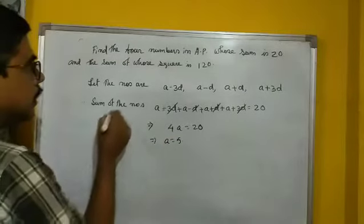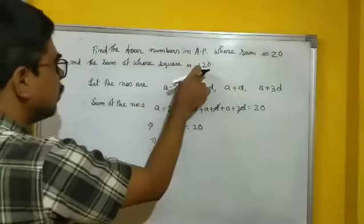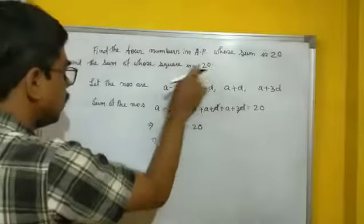After that, sum of the squares, and sum of whose square is 120. Sum of whose square is 120, that means what?